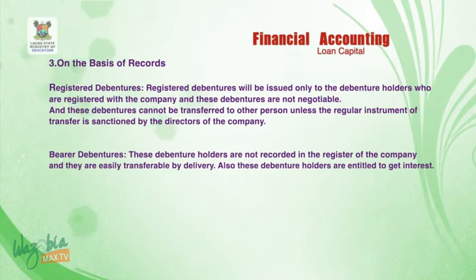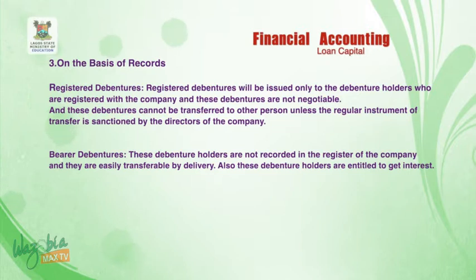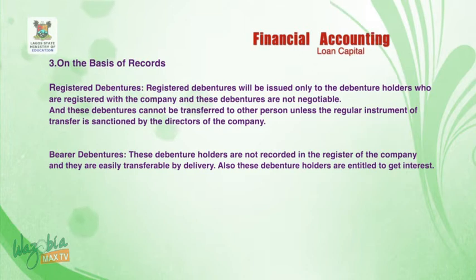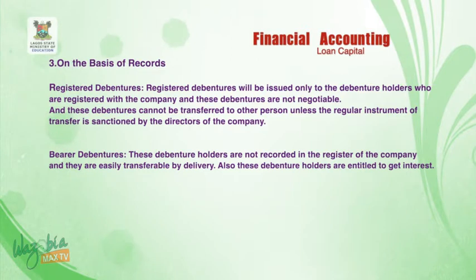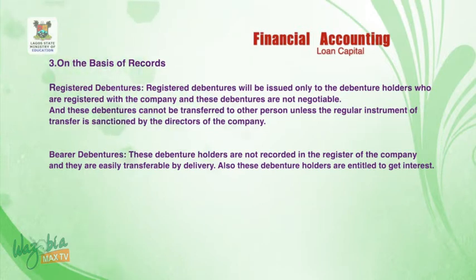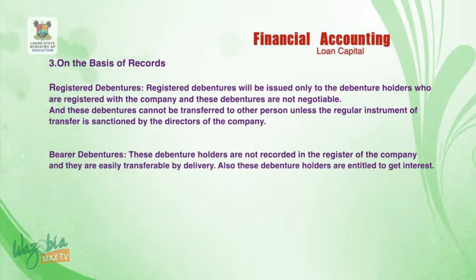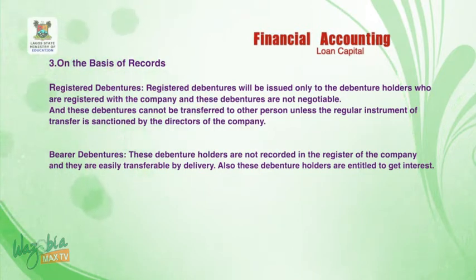Number three — on the basis of records — we have registered debentures and bearer debentures. Registered debentures are issued only to debenture holders who are registered with the company; these are not negotiable and cannot be transferred to another person unless a regular instrument of transfer is sanctioned by the director of the company. Bearer debentures are not recorded in the register of the company and are easily transferable by delivery; these debenture holders are also entitled to get interest.